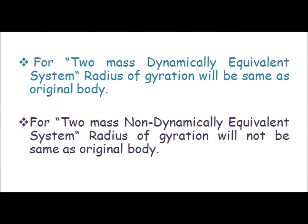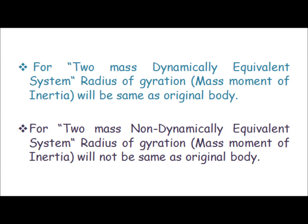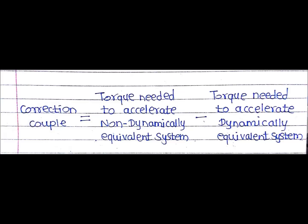A two-mass dynamically equivalent system will have the same radius of gyration as the original rigid body, while a two-mass non-dynamically equivalent system will have a different radius of gyration. In both systems, the total sum of the two masses equals the mass of the original body. However, the mass moment of inertia of the dynamically equivalent system equals that of the original body, while for the non-dynamically equivalent system it does not.